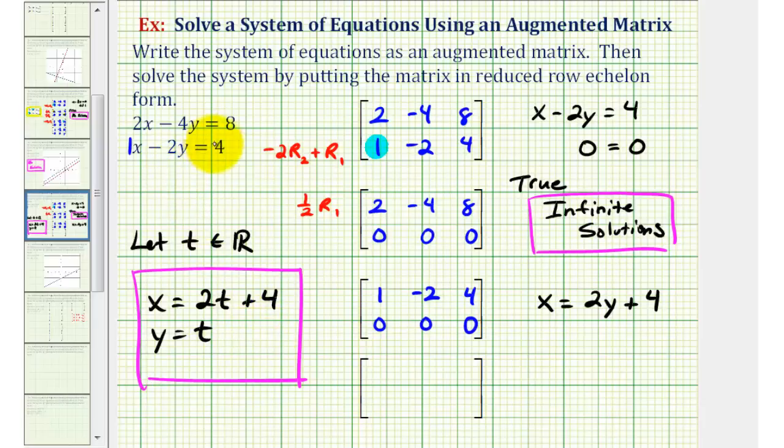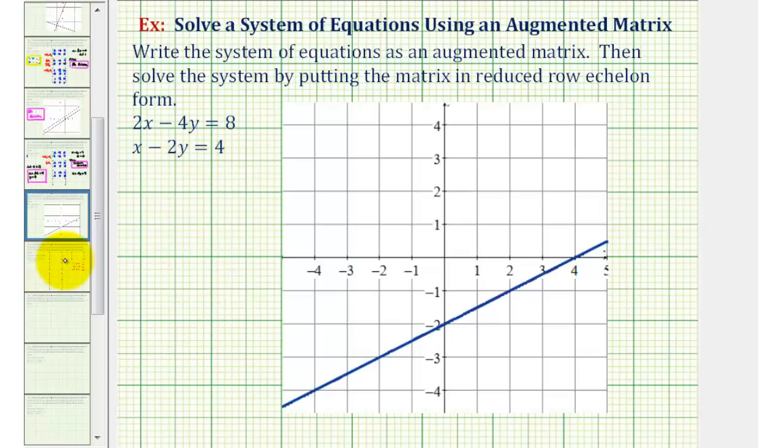To check this, we could graph the two linear equations on the same coordinate plane to see if they have an infinite number of points in common. Which means, if we graph these two lines on the same coordinate plane as we have here, they're actually the same line, which means they share an infinite number of points, indicating the system has an infinite number of solutions.